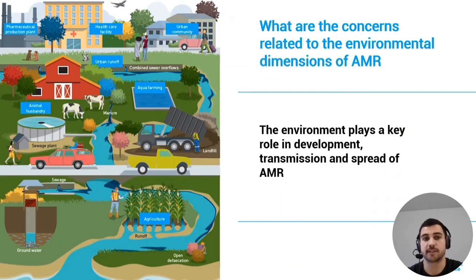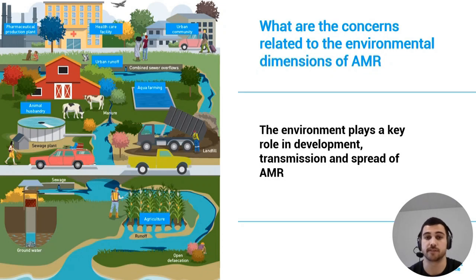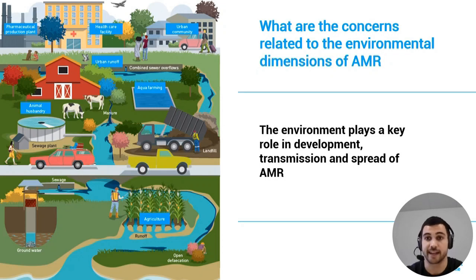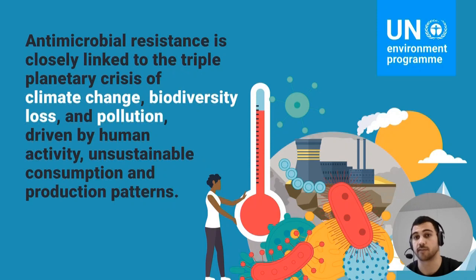The environmental dimensions of AMR are complex, so to understand the development, transmission, and spread of AMR in the environment, it is imperative to view it through a multidimensional lens. The environment is strongly present in all three stages: development, transmission, and spread. AMR challenges cannot be understood or addressed separately from the triple planetary crisis of climate change, biodiversity loss, and pollution and waste.